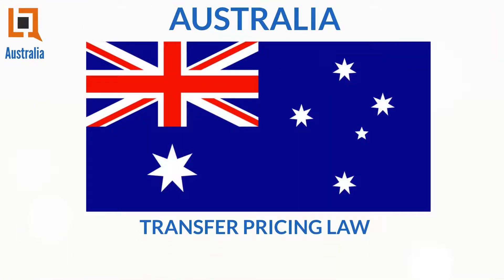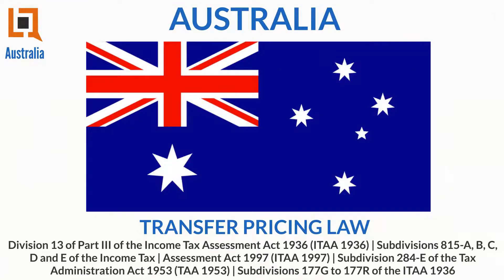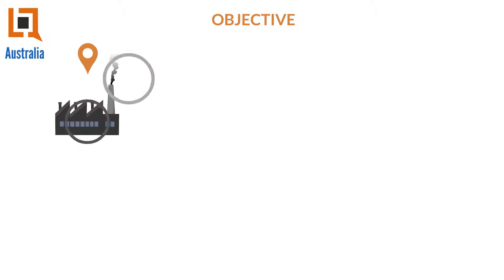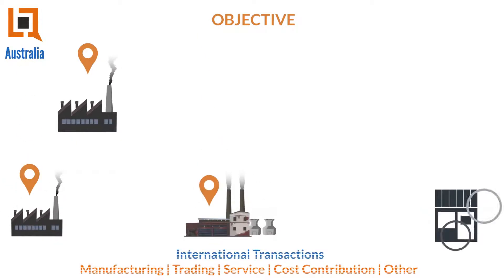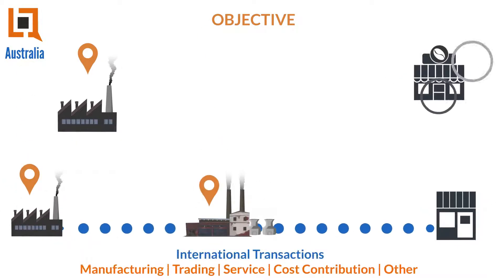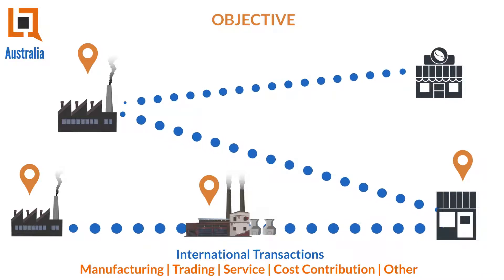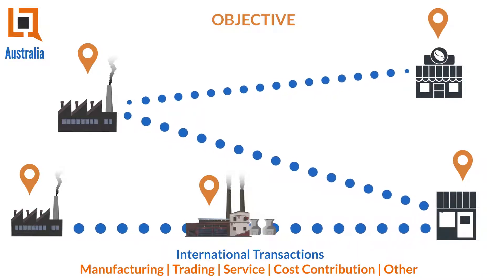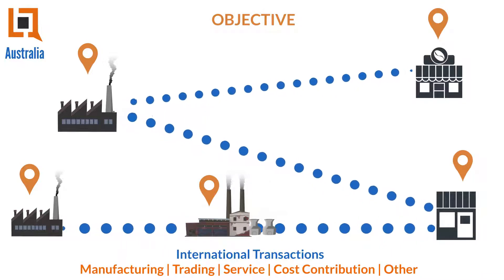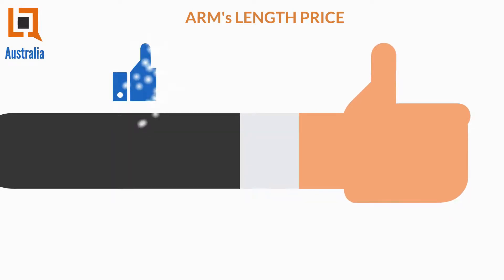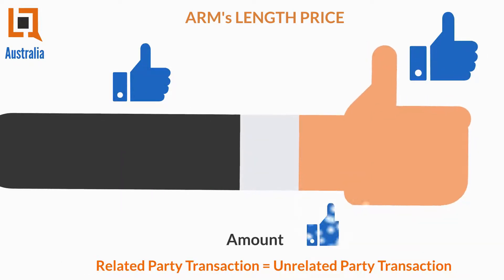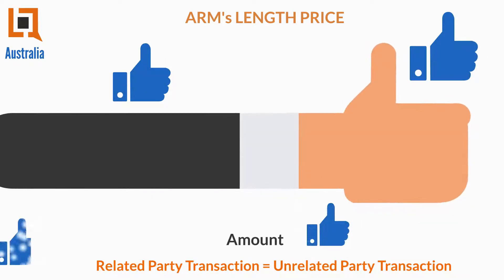Transfer pricing law was introduced in Australia in 1981. The objective is to ensure that international transactions between related companies take place at a price as if the transaction was taking place between unrelated parties. The price at which a transaction between related parties takes place, as it would between independent parties, is known as arm's length price.